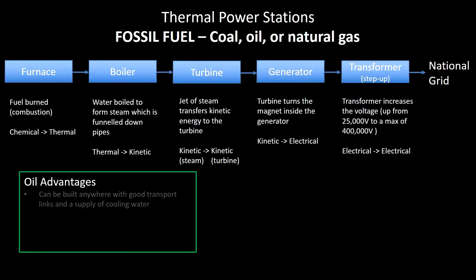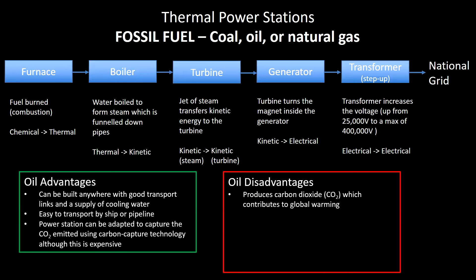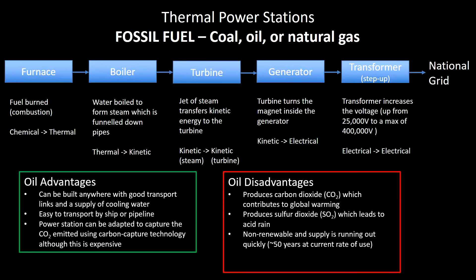The block diagram is the same for oil and natural gas. Oil advantages: again very similar — you can transport oil by ship or pipeline which is a little more convenient. Disadvantages: same two things — carbon dioxide and sulfur dioxide. It's non-renewable and the supply is running out more quickly than coal, with current reserves estimated at about 50 years. That depends on whether more is found and whether the rate of use changes. Oil is also a little more expensive than coal, partly because it's used for other things.